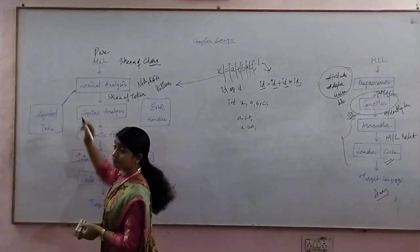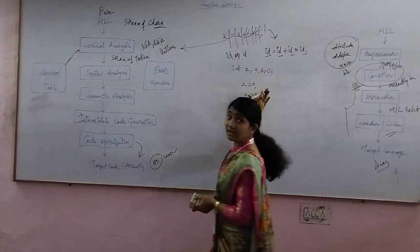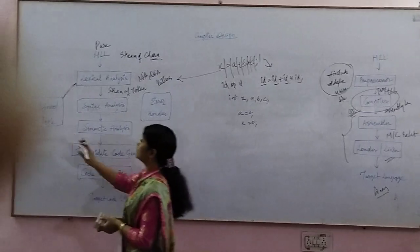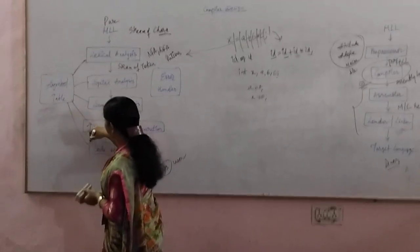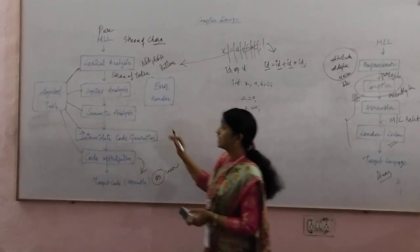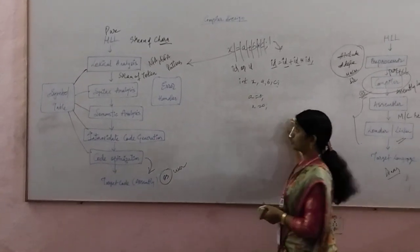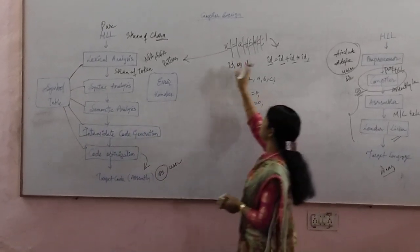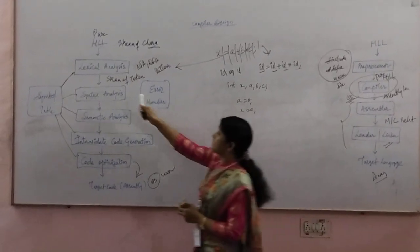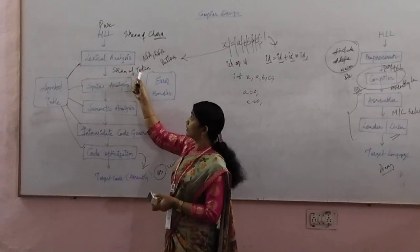The lexical analysis phase and the symbol table have communication with each other. Whenever the lexical analysis phase stores information about particular variables, this information is used by other phases of the compiler. The symbol table has communication with each and every other phase of the compiler. By using the information stored by the lexical analysis, the other phases can execute and understand the meaning of a particular statement.